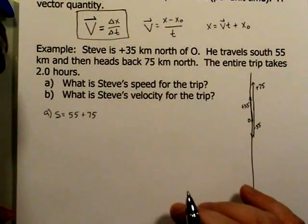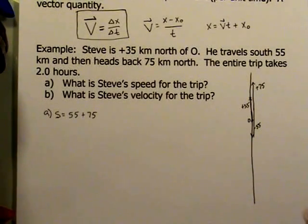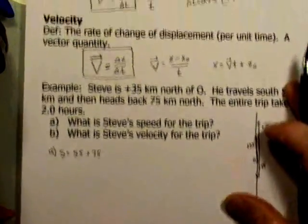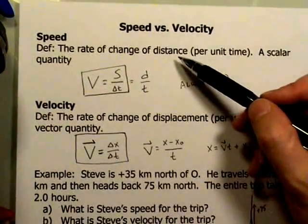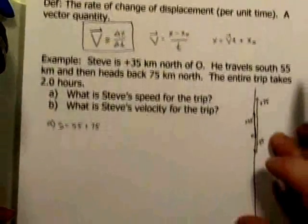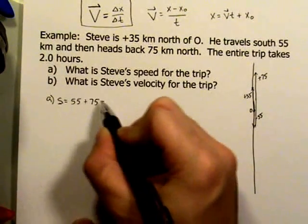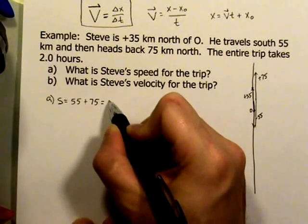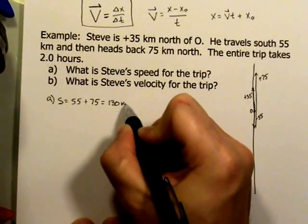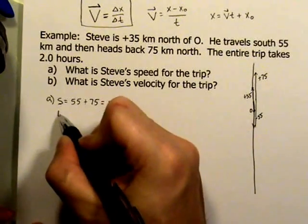It doesn't care whether you traveled north or traveled south, east, west, north, or south. It's all positive when you're thinking about the speed because, again, speed is based on the distance. And distance is always positive. So the speed, I'm sorry, the distance for this guy is 130 kilometers.